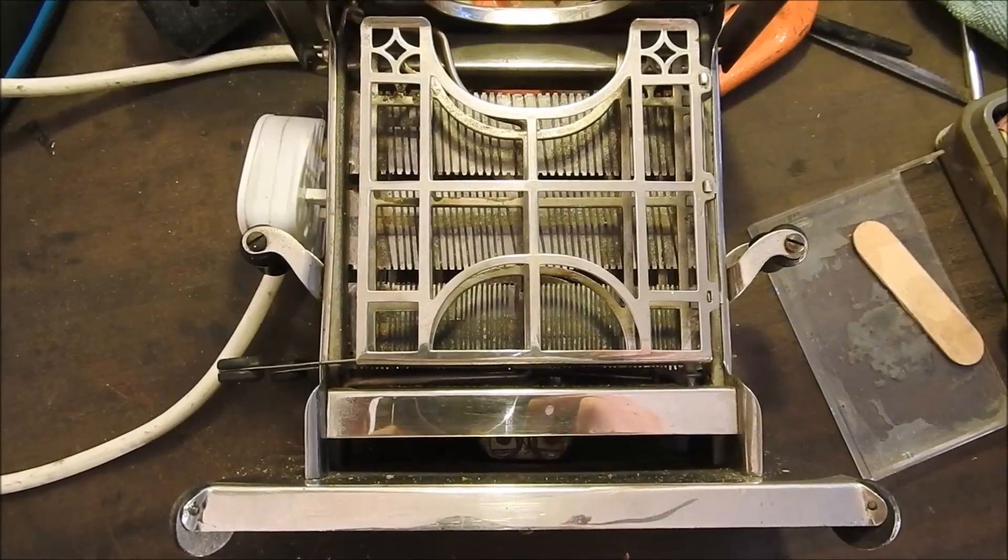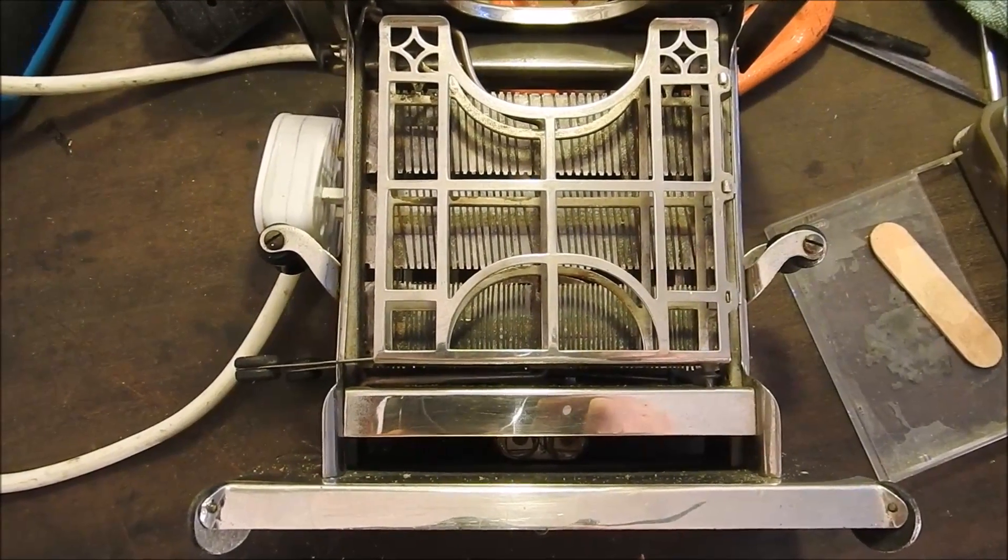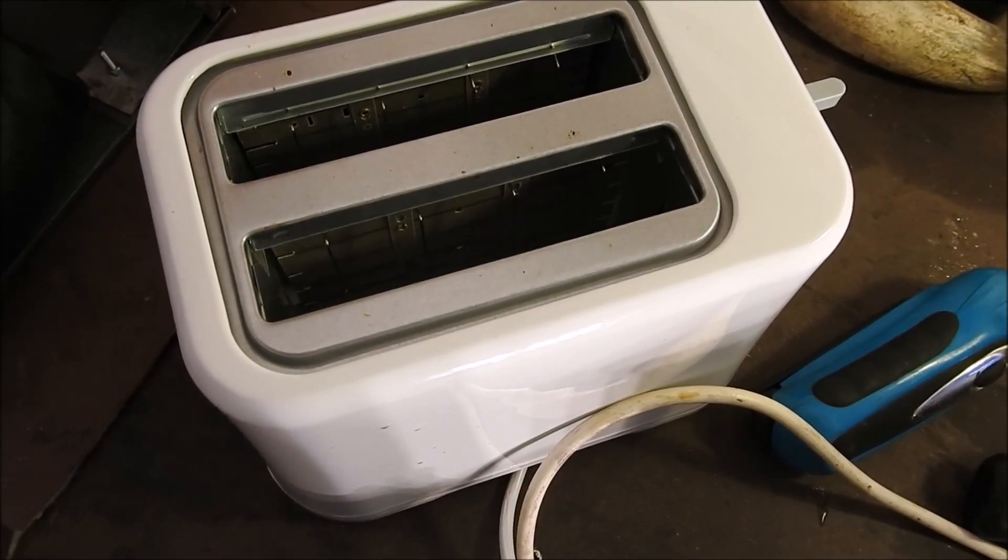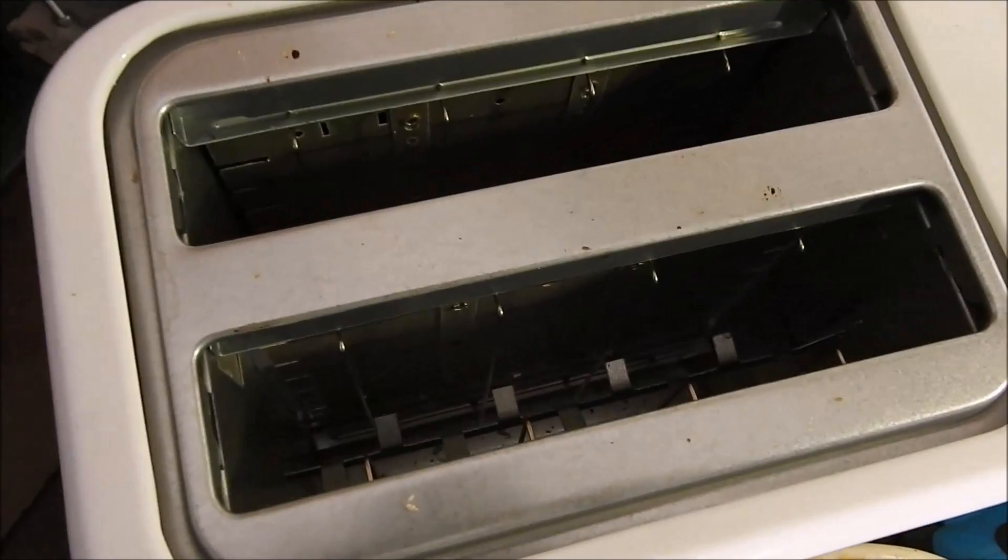You can buy nickel cadmium wire online but it's quite expensive. So the next best thing is to buy a cheap old toaster from the charity shop. It costs four pounds and take out the innards from that.